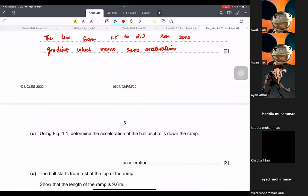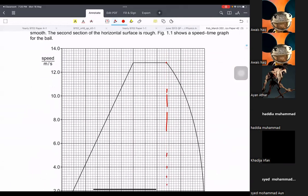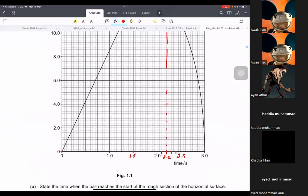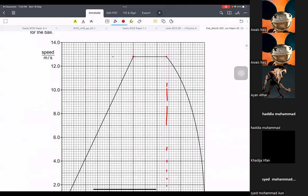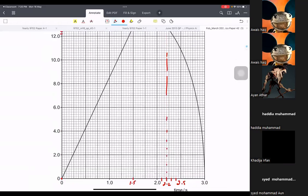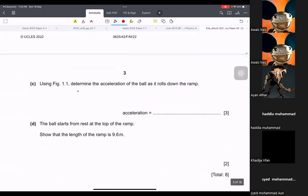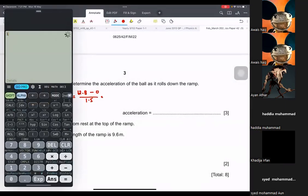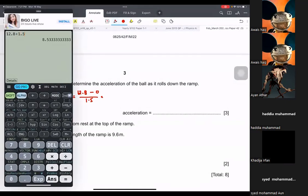Now it says determine the acceleration of the ball as it rolls down the ramp. So we gotta find the acceleration here. The first point is zero and zero. And then you see at this point, if this is 12, this is 13. So 12.8 and the time is 1.5. So 12.8 minus 0 divided by 1.5. So that would be the acceleration. So it is 8.5 meters per second squared.